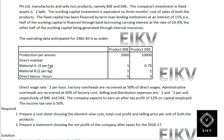Direct material: Material A at 4 per kg — 1 kg for BXE and 0.75 kg for DXE. Material B at 2 per kg — 1 kg each for both products. Direct labor hours: 5 hours for BXE and 3 hours for DXE. Direct wage rate is 2 per hour. Factory overhead is recovered at 50% of direct labor cost.